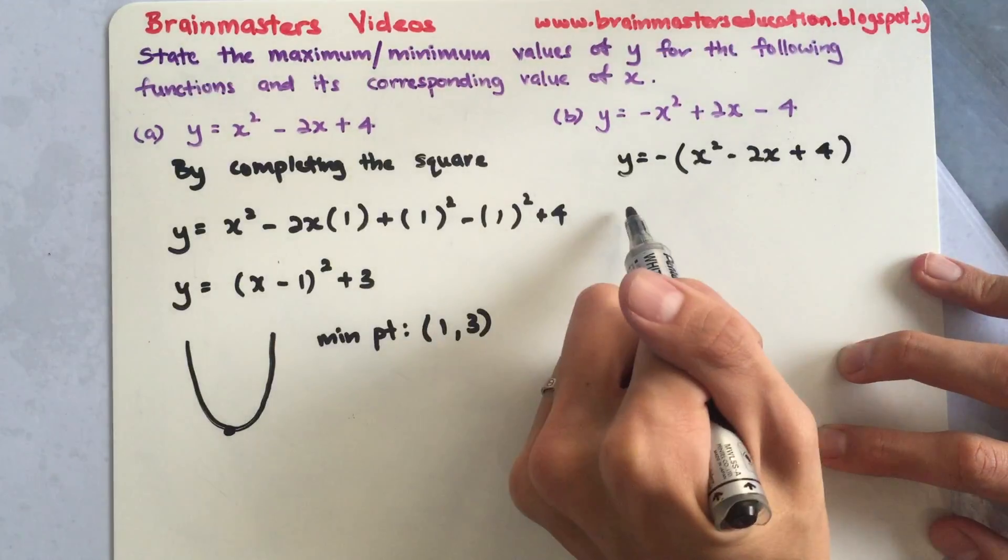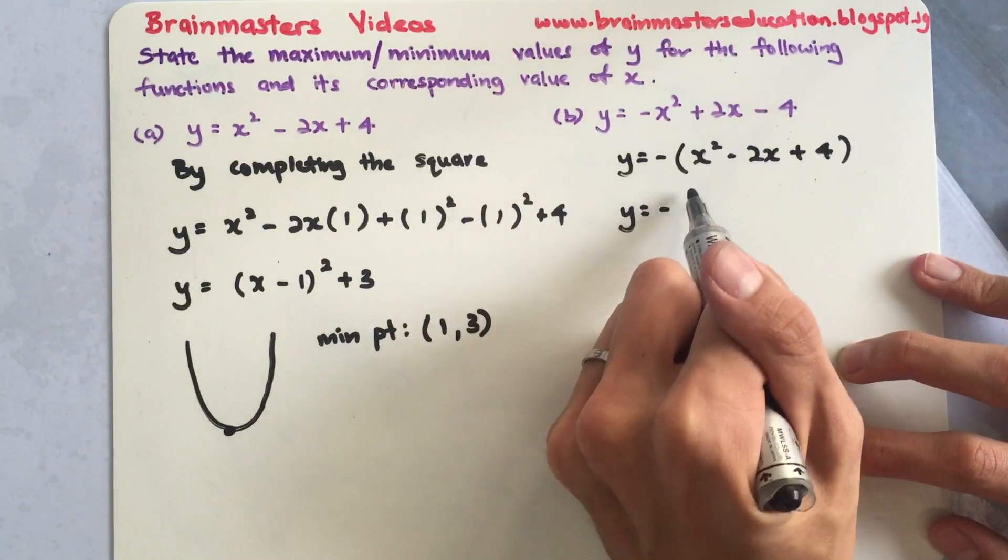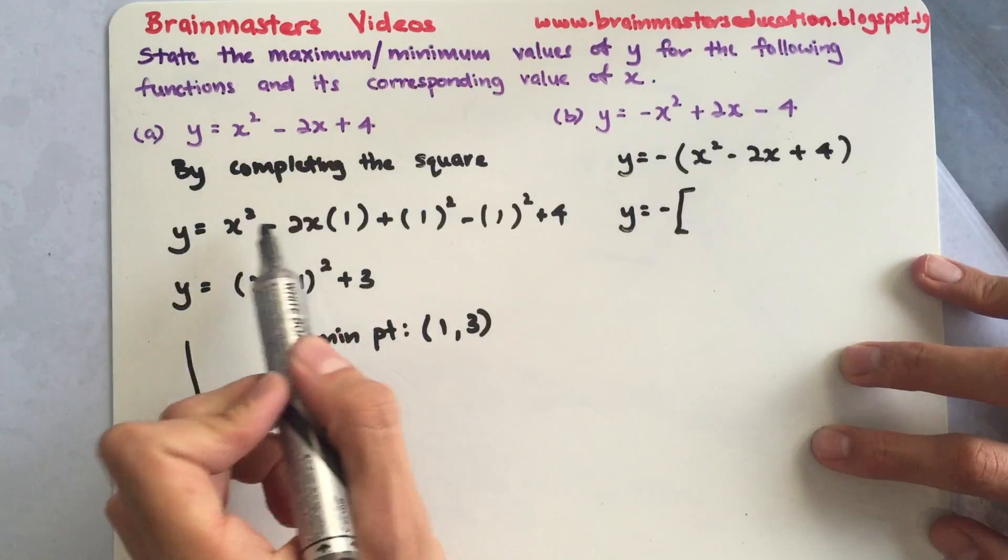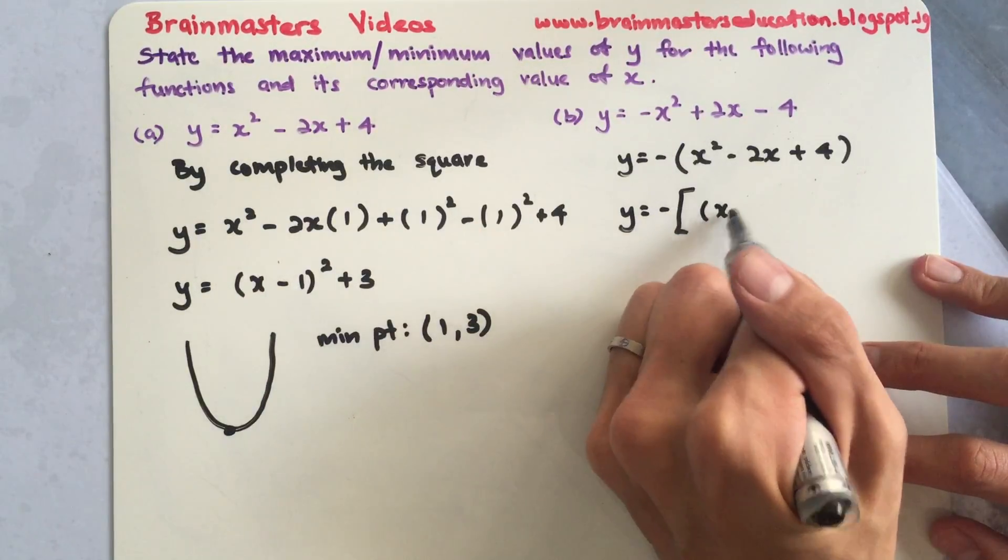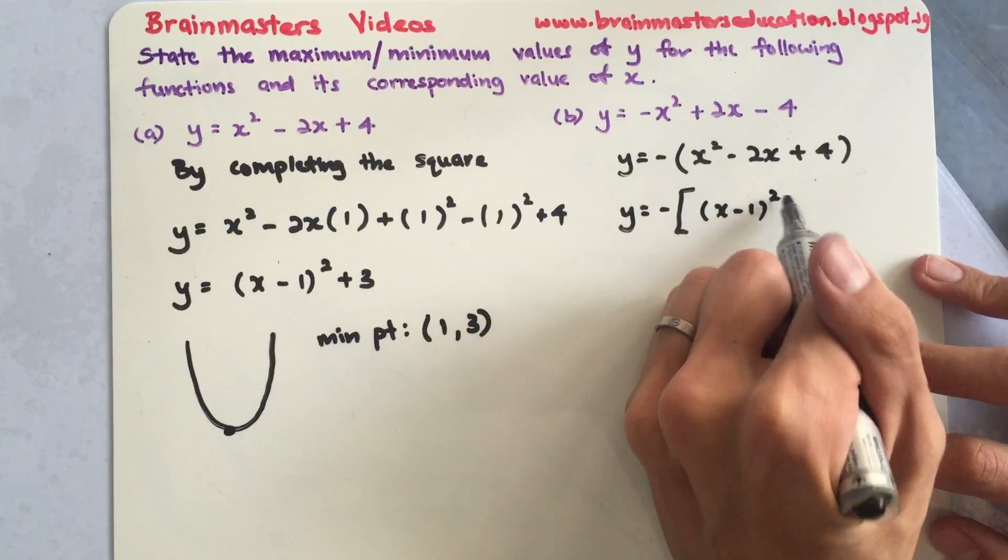After that, complete the square based on the inside. This is actually the same, so I'll just copy this over. I have x minus 1 whole thing squared plus 3.